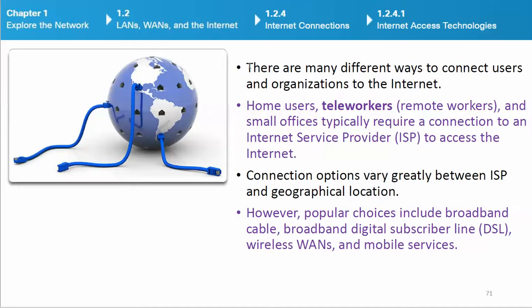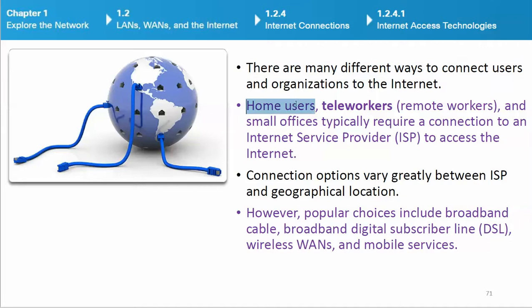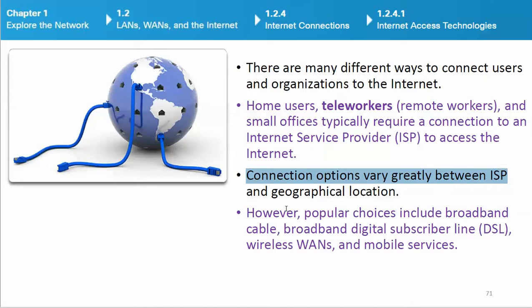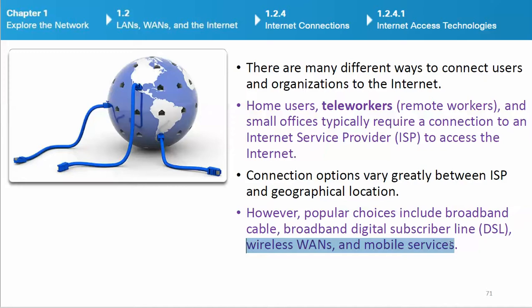There are many different ways to connect users and organizations to the Internet. Home users, teleworkers, remote workers, and small offices typically require a connection to an Internet service provider to access the Internet. Connection options vary greatly between ISP and geographical location. However, popular choices include broadband cable, broadband digital subscriber line (DSL), wireless WANs, and mobile services.